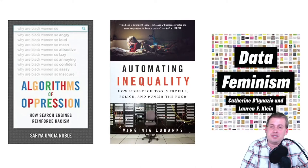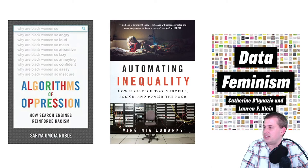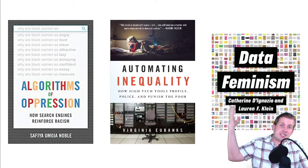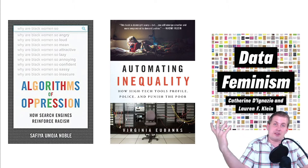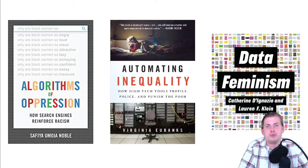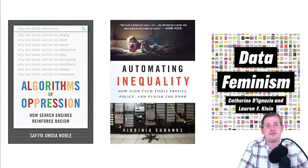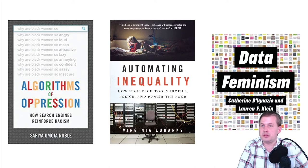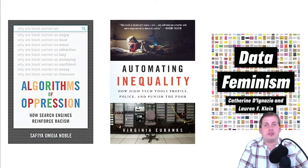There's a whole world of research on this. Three books provide great overviews: Algorithms of Oppression, Automating Inequality, and Data Feminism. They all argue that virtually every major algorithm — Google's search rankings, Twitter's feed algorithm, Facebook's algorithm, Amazon's pricing algorithm — is biased toward white males and excludes people who are not white males.